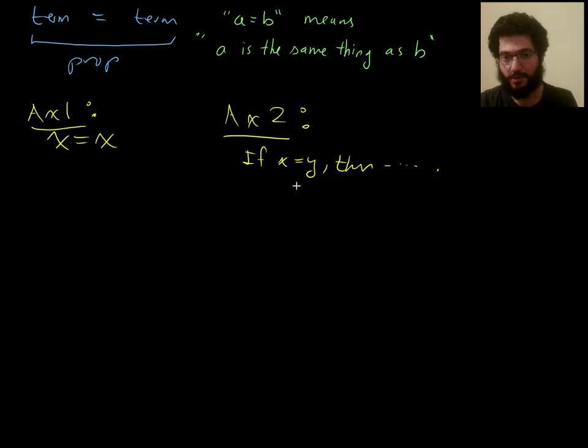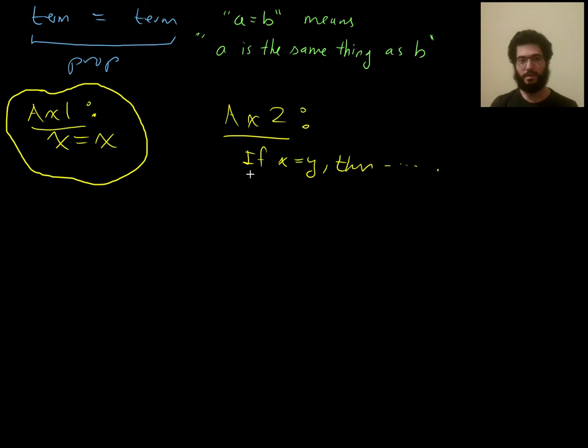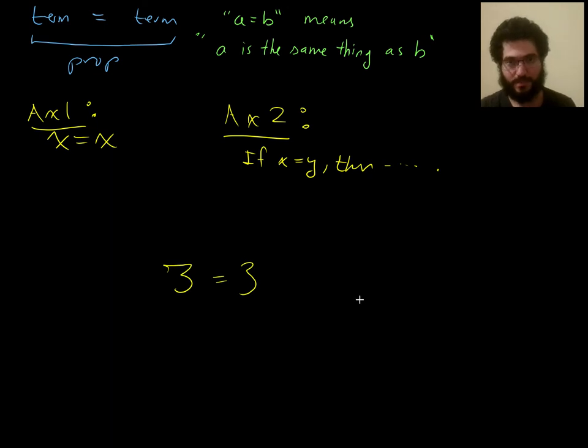So that's all we had for deducing things related to equality. We have a way to use equality, and we have only this one measly little way to generate equalities. So right now, with our system as it stands, there's no way to prove that anything equals anything else, except these silly little things equal themselves kind of things.